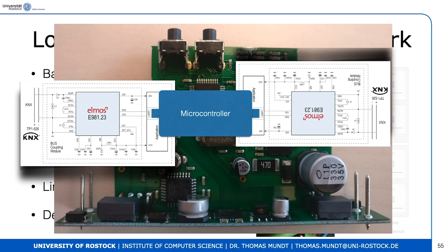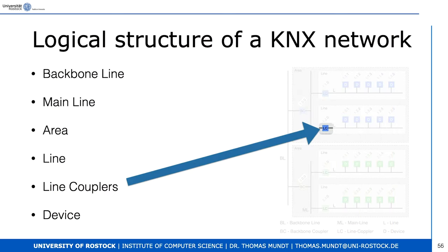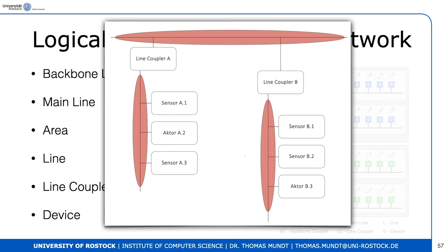The line coupler decides whether it forwards telegrams from one line to another based on rules in its memory. Line couplers form a broadcast domain — if someone sends a broadcast on a line, every device on that line can intercept, eavesdrop, and wiretap those telegrams. A line is a broadcast domain in KNX with twisted pair cabling.